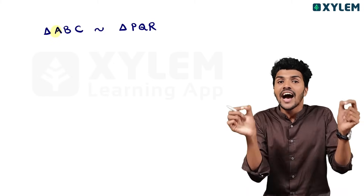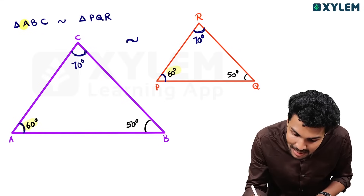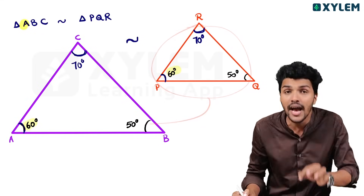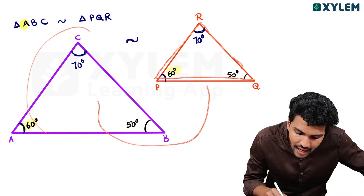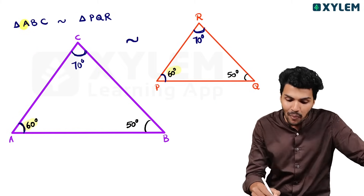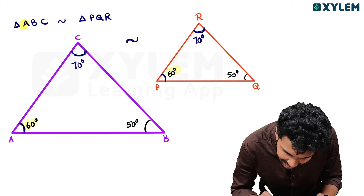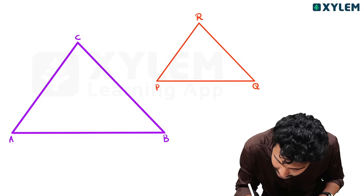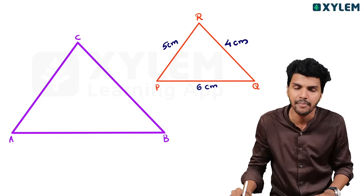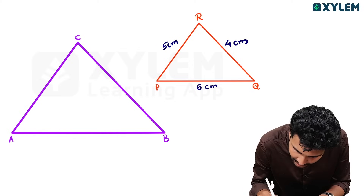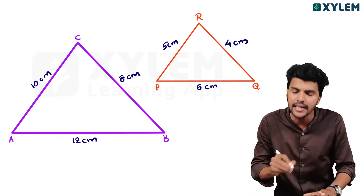Now consider side lengths: triangle ABC has sides 6 cm, 5 cm, and 4 cm. The other triangle has corresponding sides of 12 cm, 10 cm, and 8 cm.